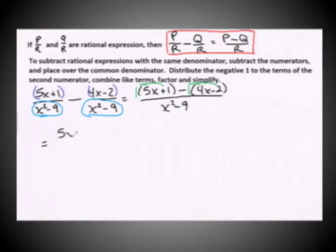We have positive 5x, positive 1. Now we have negative 4x and positive 2, all over our common denominator x squared minus 9.